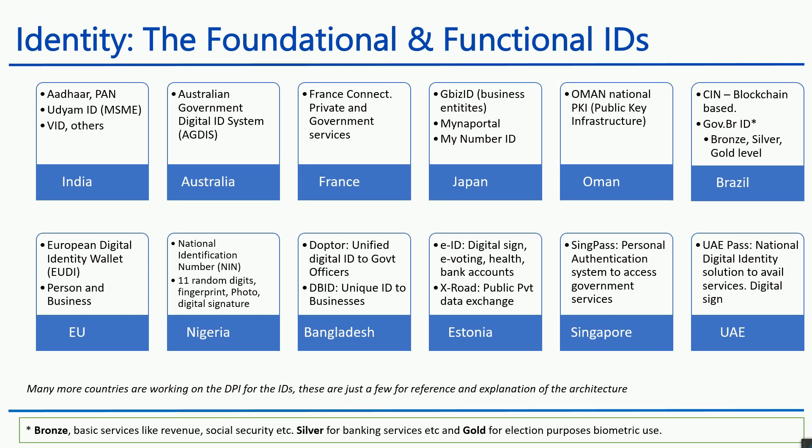Foundational identity means the identity becomes a foundational layer for a country — for example, a digital national identity. Functional IDs are more specific to a function: a health ID, an education ID, a student ID are all functional IDs. A national identity is a foundational ID, while functional IDs are the basis on which multiple other things can be created.